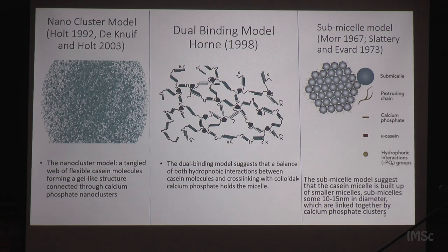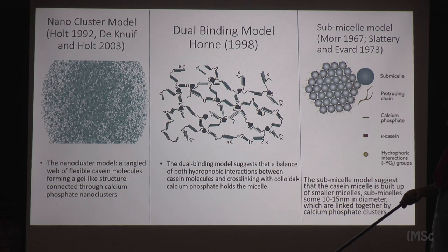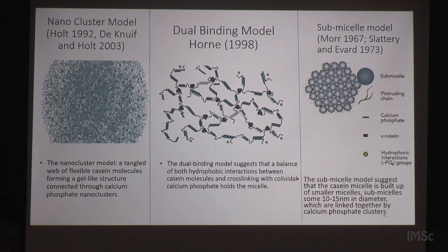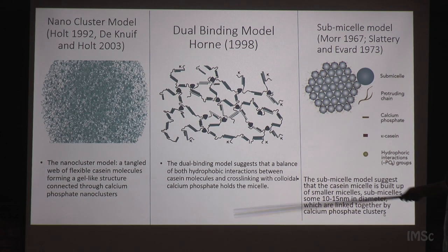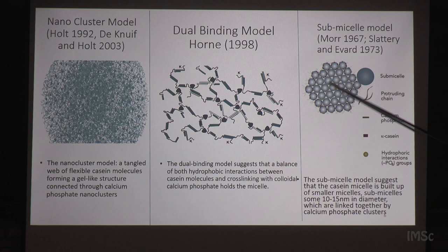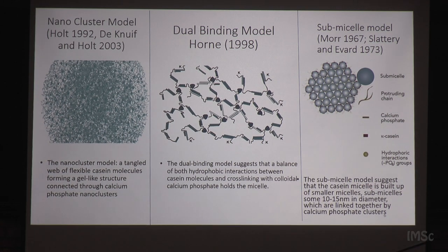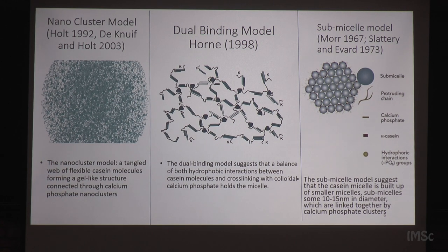There are three broadly accepted models for the casein micelle structure. The nanocluster model treats it as a tangled web of flexible casein molecules forming a gel-like structure. The dual binding model suggests it is a balance between hydrophobic interactions between casein and cross-linking due to calcium — it is known that without calcium, the gel will not form. The submicelle model proposes that within the micelle there are smaller submicelles of 10 to 15 nanometers, with chains protruding outward and hydrophobic as well as weak van der Waals interactions holding these together.